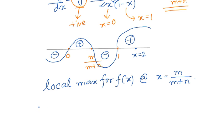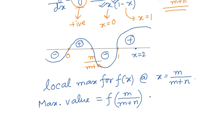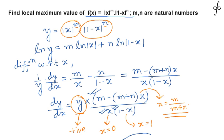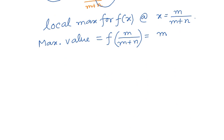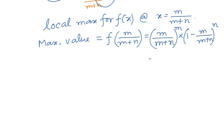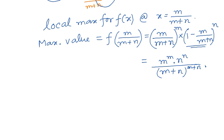The local maximum value is obtained by substituting x = m/(m+n) into f(x) = |x|^m · |1-x|^n. Since this value is positive, modulus has no effect. This gives (m/(m+n))^m · (n/(m+n))^n, which simplifies to the final answer: m^m · n^n / (m+n)^(m+n).